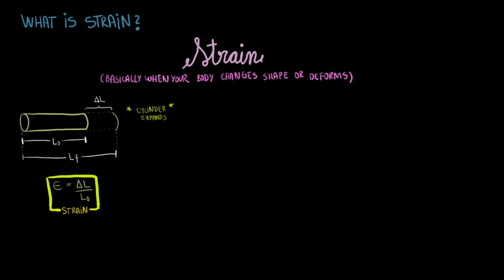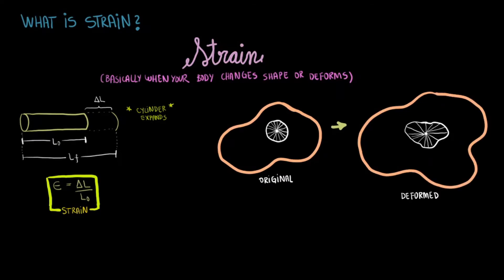As a body deforms, you can track the deformation using lines. These lines can change both their length and the angle between them. If they change length, we have normal strains. If they change angle, we have shear strains. If both things happen, we have normal and shear strains.